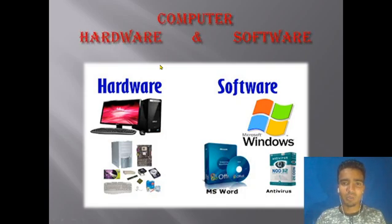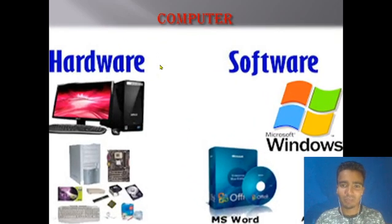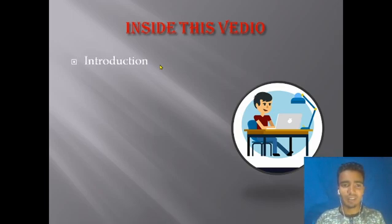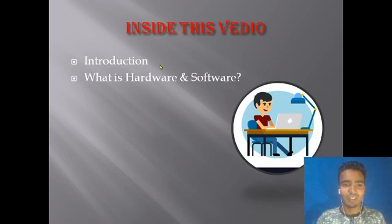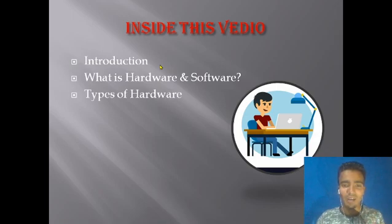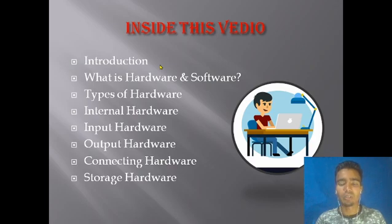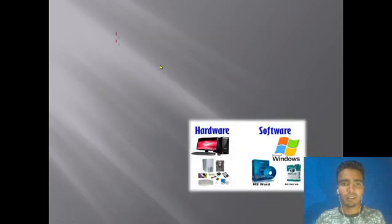Hi, today we discuss computer hardware and software. Inside this video, I am going to talk about the following topics: number one, introduction; number two, what is hardware and software; and the types of hardware — internal hardware, input hardware, output hardware, connecting hardware, and storage hardware.